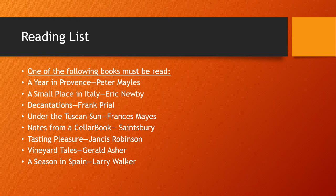Decantations is by Frank Prial, who was the wine writer for the New York Times for a generation — a very clever writer. This is not a book you'll read straight through in one afternoon. It's a collection of his articles from the Times, so if you like to read five to ten pages before bed each night, this is a perfect book for you. Each story is wildly different, so it doesn't build to a climax, but he writes beautifully about wine and about the people in wine.